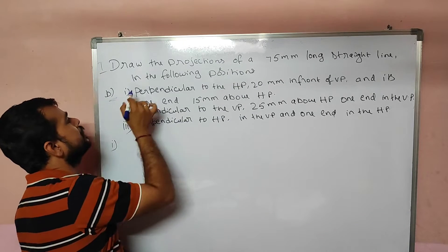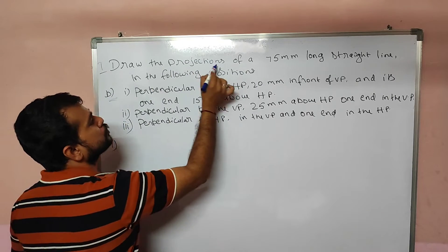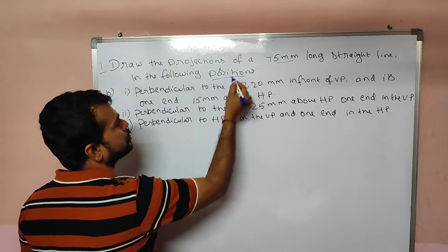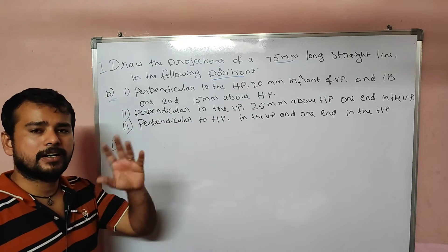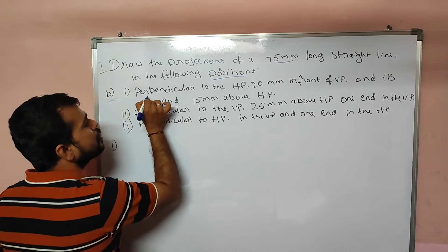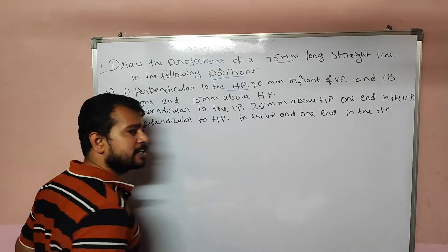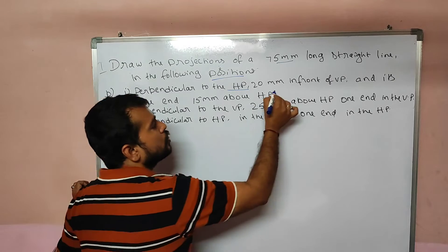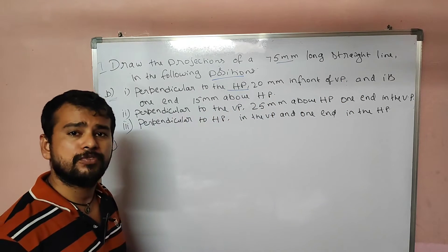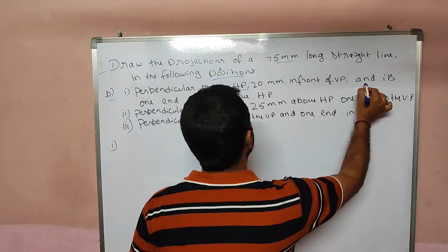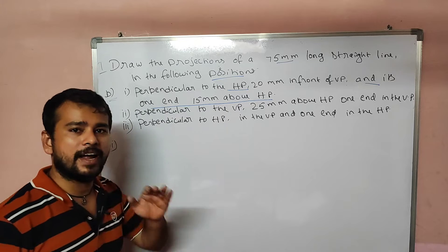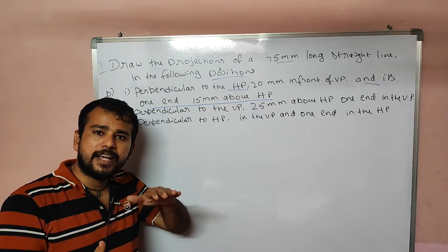Draw the projections of a 75mm long straight line in the following positions. Position one: the line is perpendicular to HP, 20mm in front of VP, and its one end is 15mm above HP.